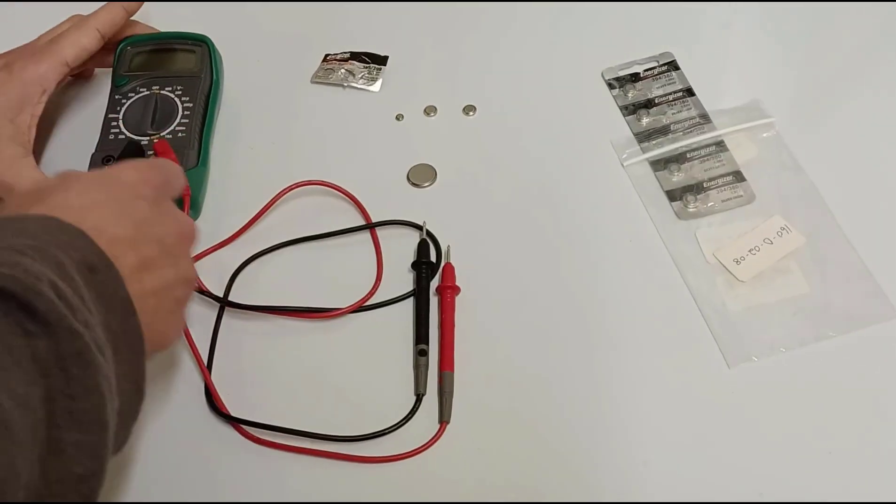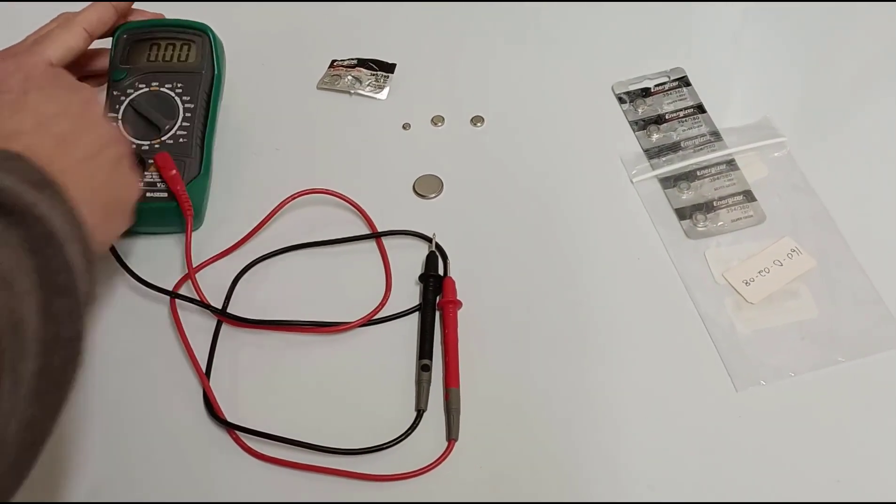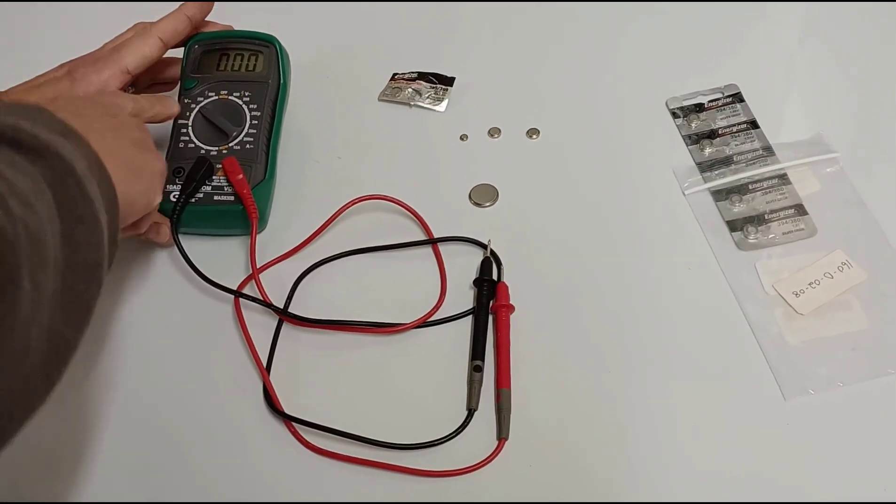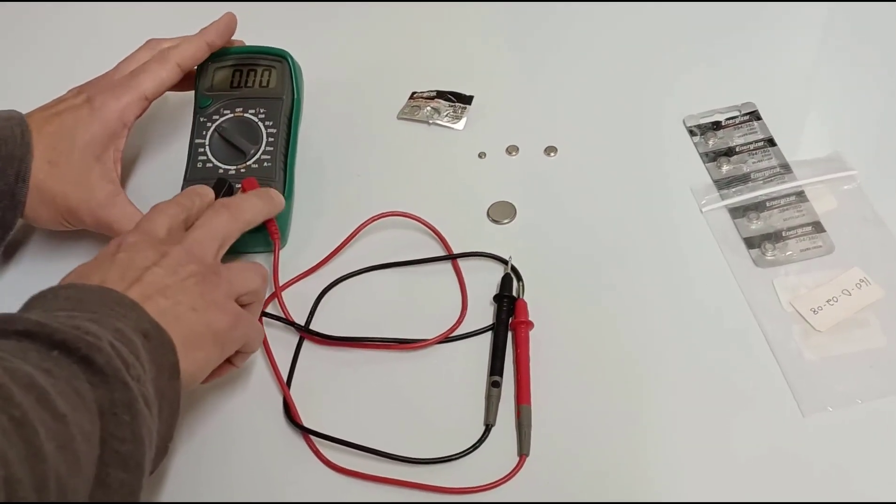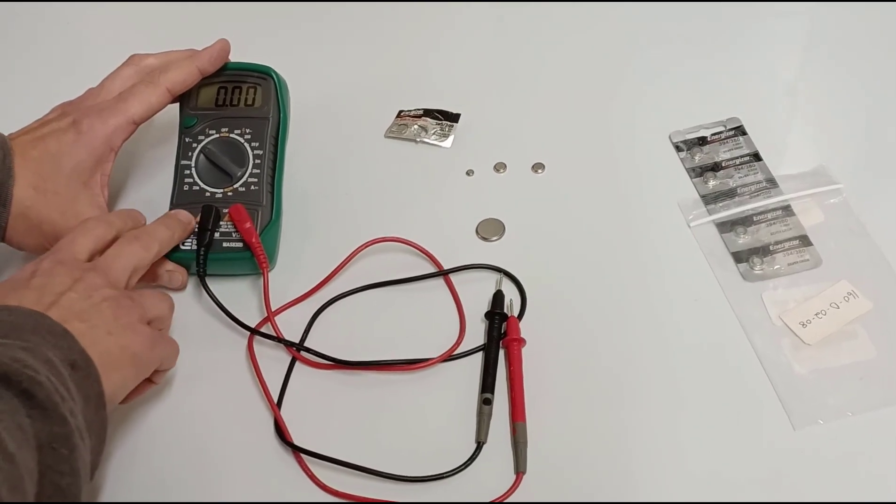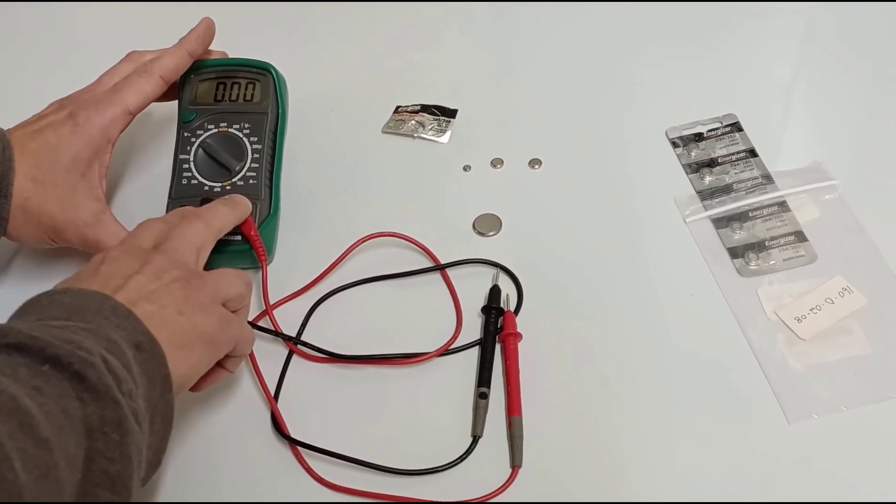What I'm going to do is take the multimeter and turn it to volts, 20 under volts. I've got my prongs here in the second two slots, not the first one. That's more for when I'm checking amps.